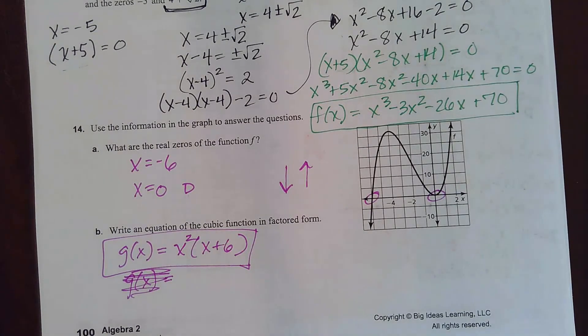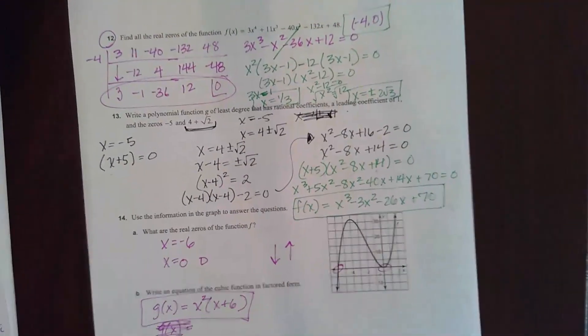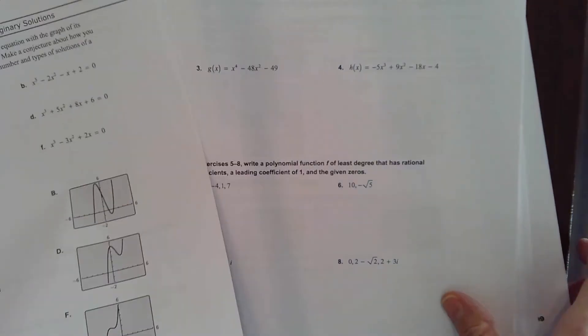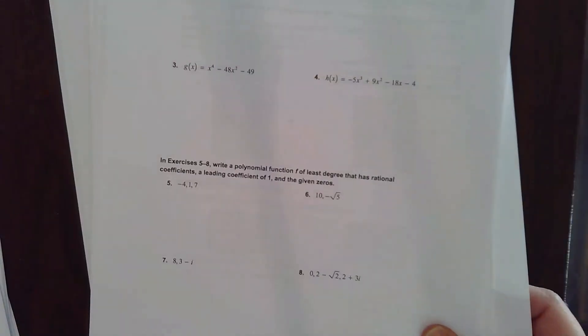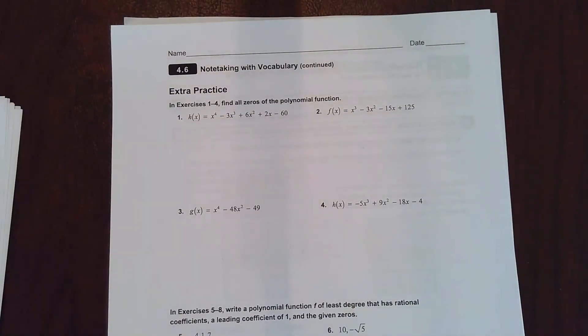I'm also going to cover 4.6 since it's all connected — I'm on page 105. In 4.6 we're looking at polynomials that have imaginary answers. Same general idea, just a little more complex because we're talking about imaginary solutions.